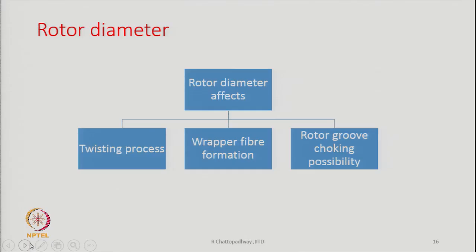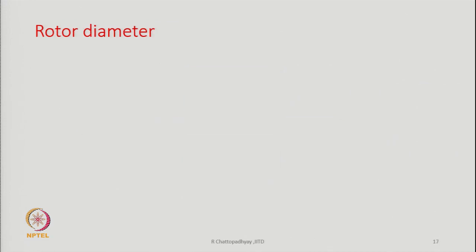Rotor diameter affects the twisting process, wrapper fiber formation, and rotor groove choking possibilities. These are the three things affected by rotor diameter, and we will discuss them now.